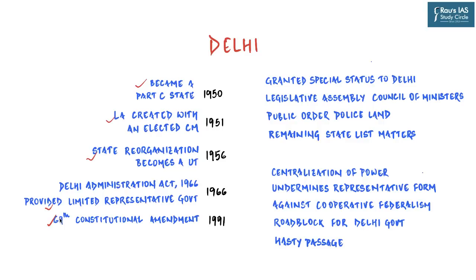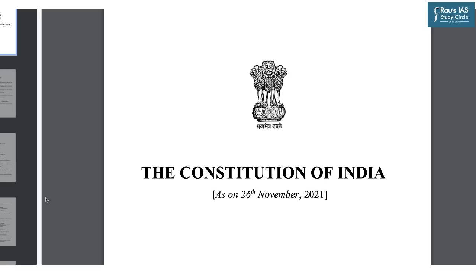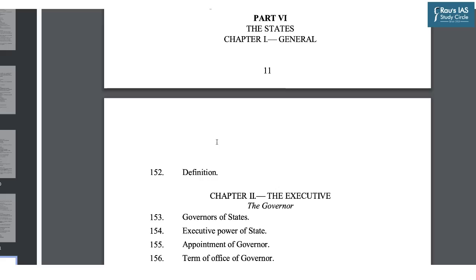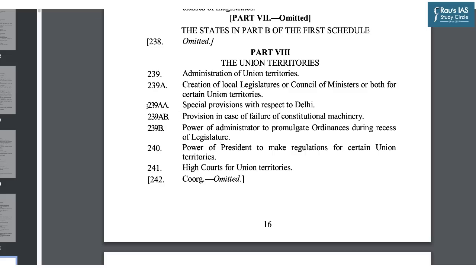The current arrangement started in 1991 when the 69th Constitutional Amendment Act, based on the Balakrishnan Committee Report, created a representative form of government in Delhi through a legislative assembly and council of ministers to aid and advise the Lieutenant Governor. Article 239AA carries special provisions with respect to Delhi. Delhi is a union territory with a legislative assembly and an elected council of ministers — just like Pondicherry — whereas all other union territories do not have this.